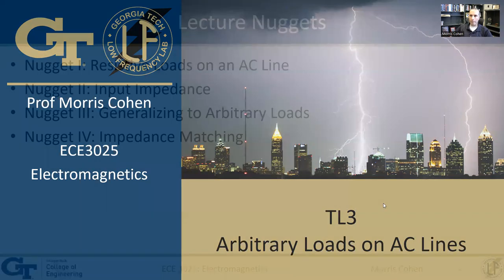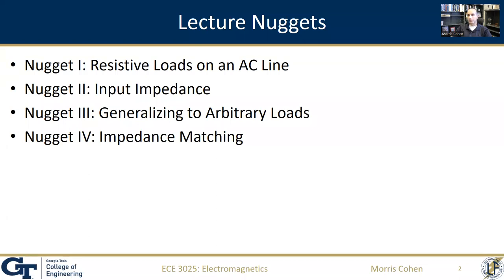In the last lecture, we considered what happens when you have open circuits or short circuits at the end of the line as our load. We also considered what happens if you have inductors or capacitors. In this lecture, we're going to expand to arbitrary loads, which basically means any combination of resistors, inductors, and capacitors. In part one, we'll talk about resistors on their own and contrast that with open and short circuits. Then we'll define the input impedance of resistive loads, and in part three we'll generalize to arbitrary loads. We'll also talk about different techniques for impedance matching for situations where you don't want any reflections coming back to a source.